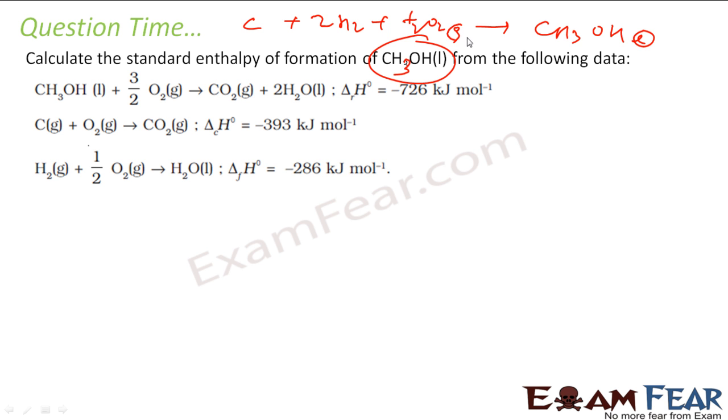Combined you get CH3OH in liquid form. This is the equation we have: carbon, hydrogen, oxygen, everything is in gas form and you get CH3OH. This is the reaction we have for formation of CH3OH. I have to form these reactions using all these.